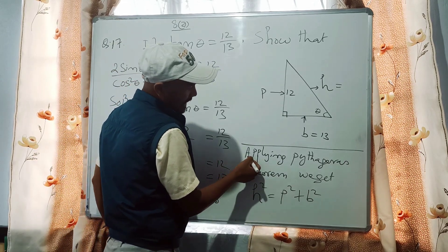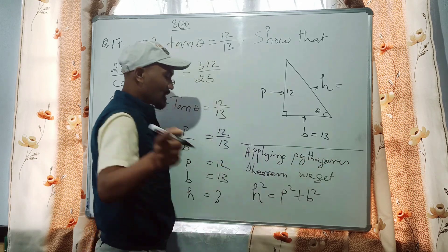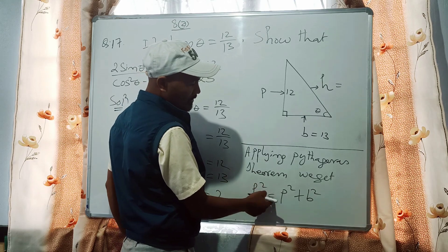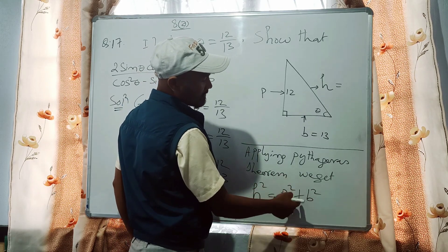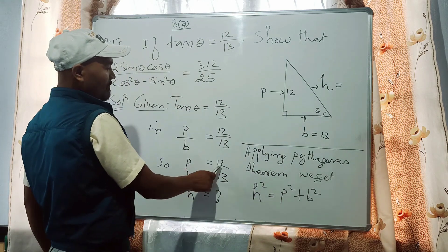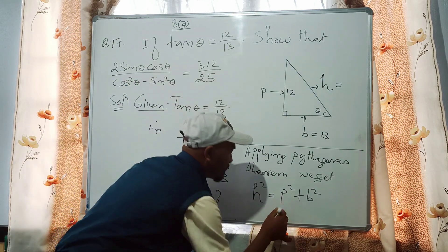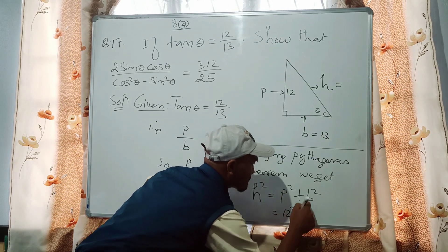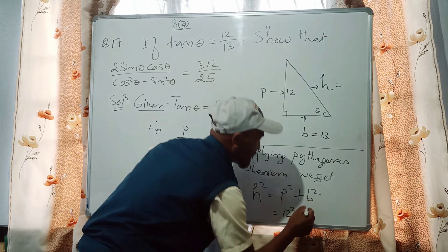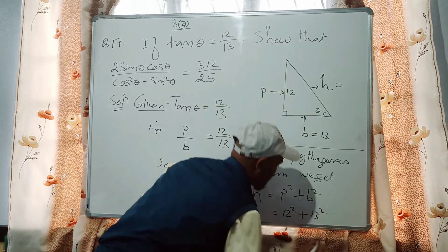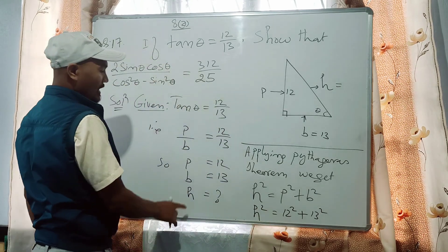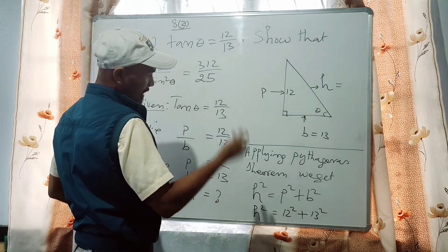Applying Pythagoras theorem, we get: the square of the hypotenuse equals the sum of the square of the perpendicular and the base. If the perpendicular is 12, then P squared equals 12 squared. If the base is 13, then B squared equals 13 squared.